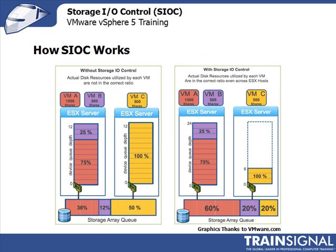How does Storage I.O. Control work? Looking at a diagram showing two ESX servers accessing the same shared storage array, Storage I.O. Control uses shares — just like you would have shares configured in a resource pool for CPU and memory. Storage I.O. Control uses those same shares. You've already got shares configured in your resource pool or on individual virtual machines, so why not use those shares for storage as well?